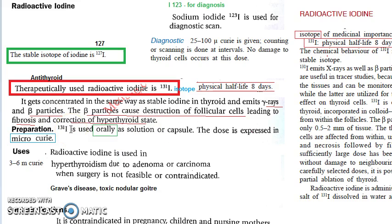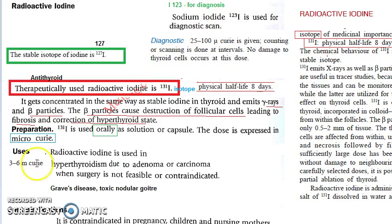Iodine 131 is radioactive. The dose is expressed in microcurie — microcurie is used for diagnostic purposes, while millicurie is used when giving it as an antithyroid agent.